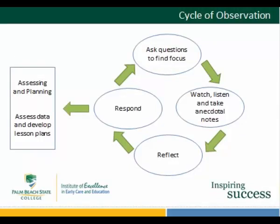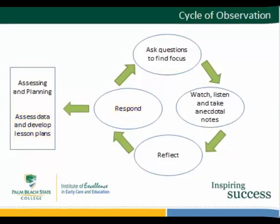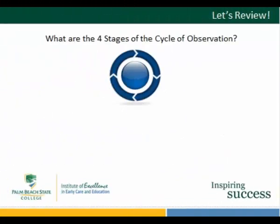Assessing and Planning. The cycle of observation almost always follows the same pattern: ask questions to find focus; watch, listen, and take anecdotal notes; reflect on the anecdotal notes that were collected; and finally respond by developing lessons that will teach children the skills they need to reach the next steps in their development and learning. The cycle of observation is used to collect child data to be able to assess and plan accordingly.